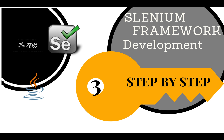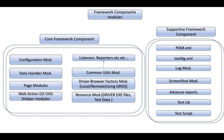Hello guys, welcome to this tutorial. This is the continuation of the Selenium framework development series. In the last section we covered the types of frameworks and had a brief introduction about each framework used heavily in the industry. In this section we'll be discussing the components we are going to use as part of framework development, how each component is interrelated, and the flow of the framework — how it will be executed, triggered, and how components are interlinked. This is a very important concept.